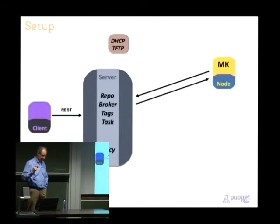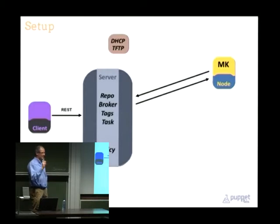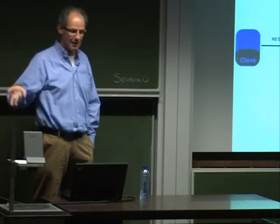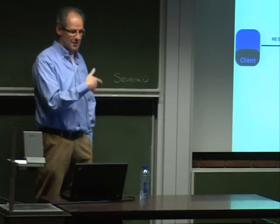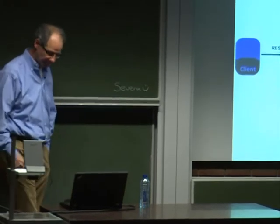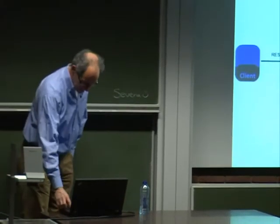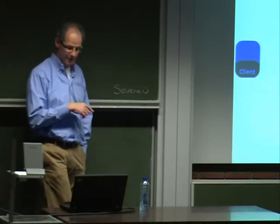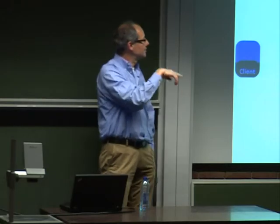To write an installer or task is actually straightforward once you have the installation automated - once you have a kickstart script and maybe a post-install shell script together, getting that onto your Razor server is a matter of writing five or six lines of metadata. Out of the box we have installers for ESXi, which was one of the initial use cases that Nick and Tom had for Razor.